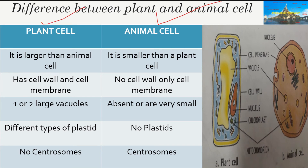Now let's look at the differences between plant and animal cells. First, plant cells are larger than animal cells. Both have a cell membrane, but plant cells also have a cell wall. Since plants lack a skeleton system, the cell wall provides an additional cover that gives the plant rigidity and helps it stand upright. Plant cells also have one or two large vacuoles to store food, whereas animal cell vacuoles are very small or absent.